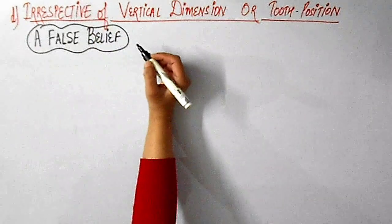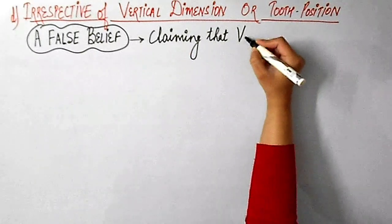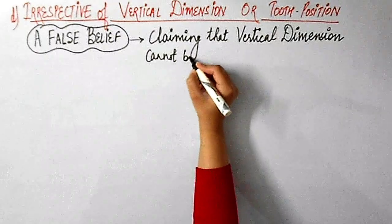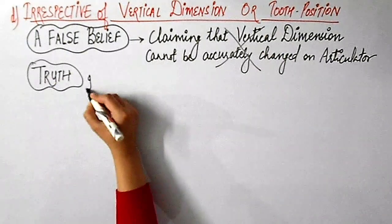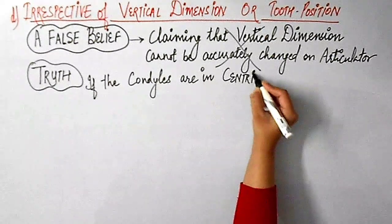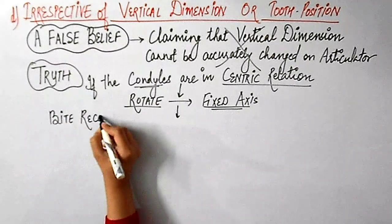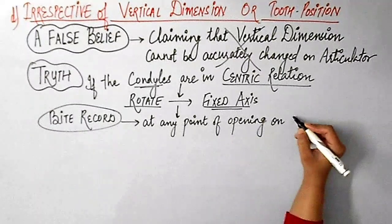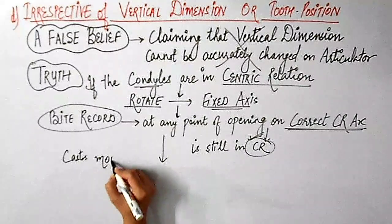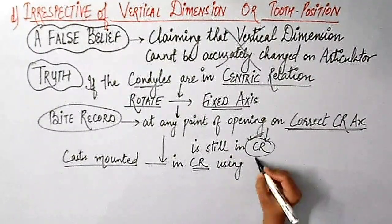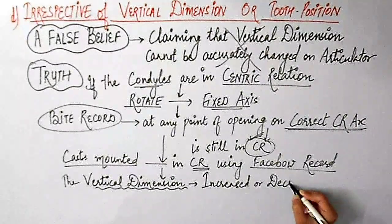This position, that means the centric relation, is irrespective of vertical dimension or tooth position. In centric relation, the condyle can rotate on a fixed axis to an opening of about 20 millimeters. But there is this false belief amongst some clinicians who discredit the use of facebow recordings and articulators, claiming that the vertical dimension cannot be accurately changed on an articulator, which is absolutely wrong. In fact, the truth is that if the condyles are in centric relation, they can rotate on a fixed axis. This is really important from a clinical point of view for you to understand: when a bite record is made at any point of opening of the correct CR arc, that means at any point of opening of the correct centric relation arc, it is still in centric relation. Therefore, when the casts are mounted on an articulator in CR using a facebow record, the vertical dimension can be increased or decreased without introducing any error.